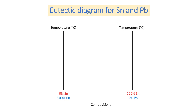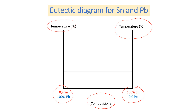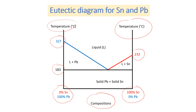To draw the eutectic diagram for tin and lead, first we draw the axes. On the x-axis we have the composition of component A and B — tin and lead. On the right we have 100% tin and 0% lead; on the left we have 0% tin and 100% lead. On the y-axis we have temperature. We draw the point at which the two components solidify: 183 degrees C. Then the melting point for lead at 327 degrees C, and the melting point for tin at 232 degrees C. We also label the regions: the liquid region, liquid plus tin, liquid plus lead.